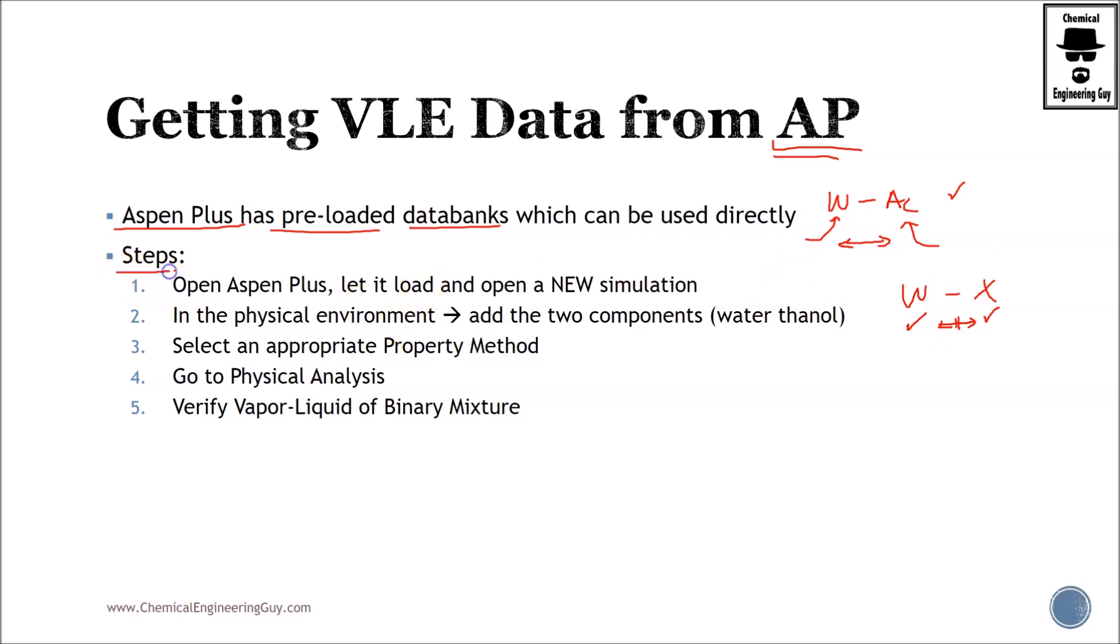Okay, so the main steps in order to get vapor liquid data from Aspen Plus is to, well, first open Aspen Plus, let it load, open a new simulation, go to the physical property environment, and add two components. In this case, you can add water and ethanol, but you can use whatever substance you want.